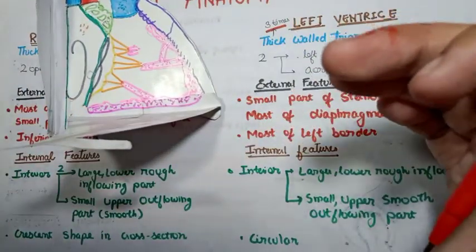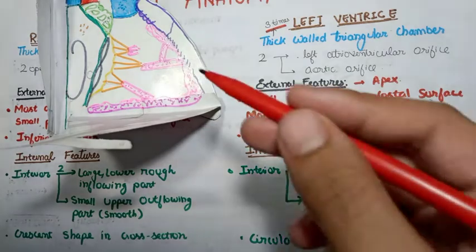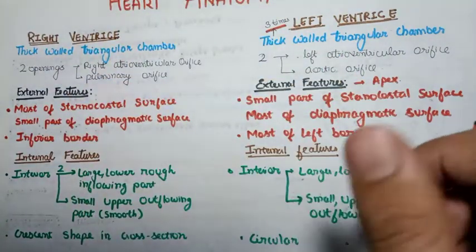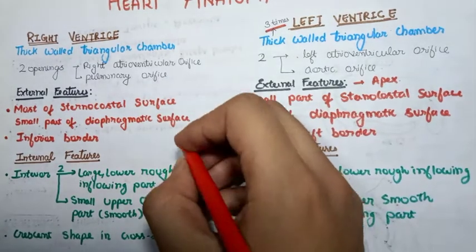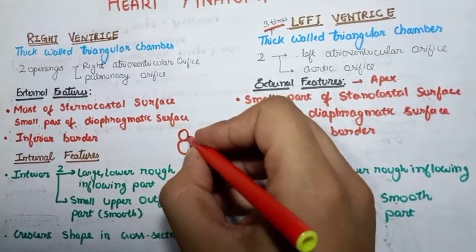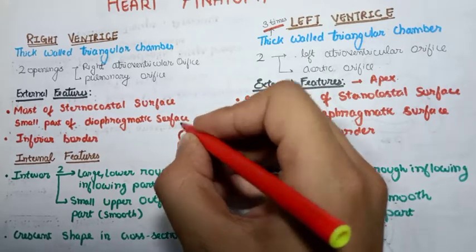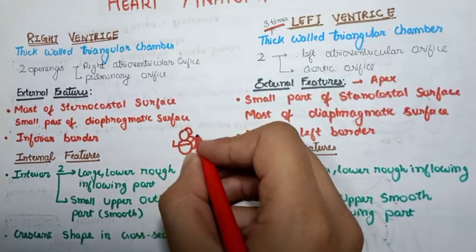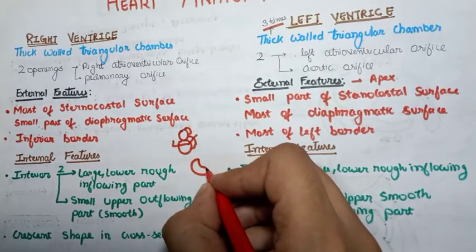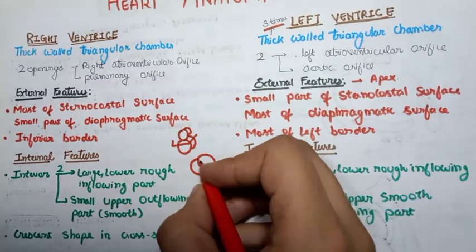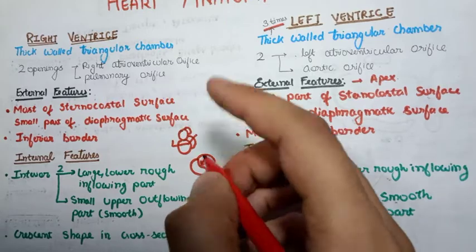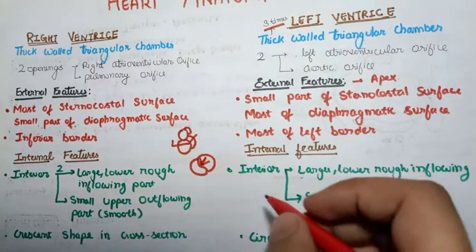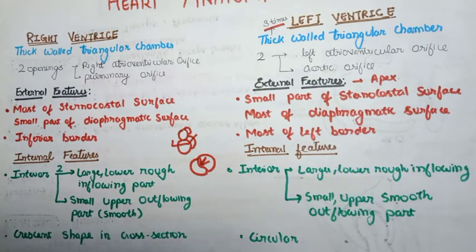The same applies to the left ventricle: it has a large lower rough inflowing part and a small upper smooth outflowing part. In cross-section, the right ventricle is crescent-shaped while the left ventricle is circular. This is because the left ventricle is situated behind the right ventricle. When a cross section is made through the ventricles, the interventricular septum is pushed anteriorly, giving the right ventricle a crescent shape while the left ventricle remains more or less circular.